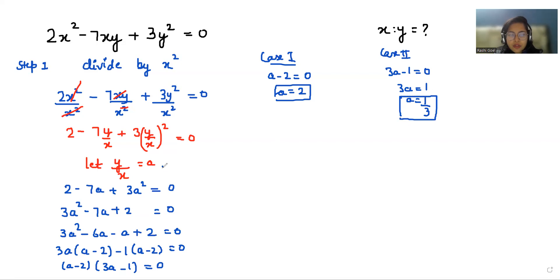Now we know that we substituted the value. So y by x equals a. So y by x equals 2. So the value of x ratio y is 1:2.